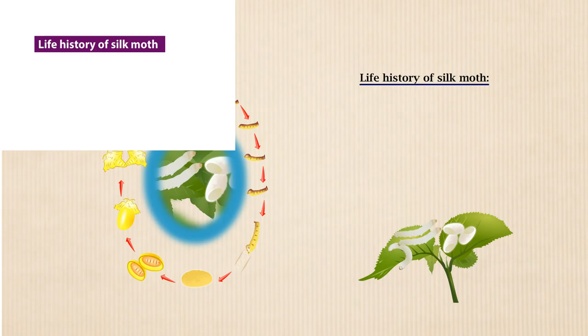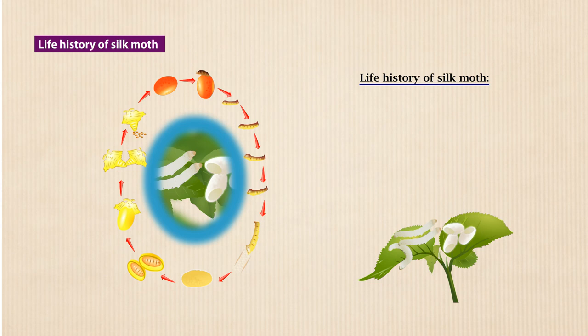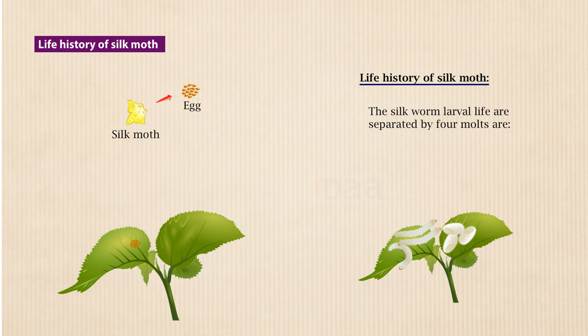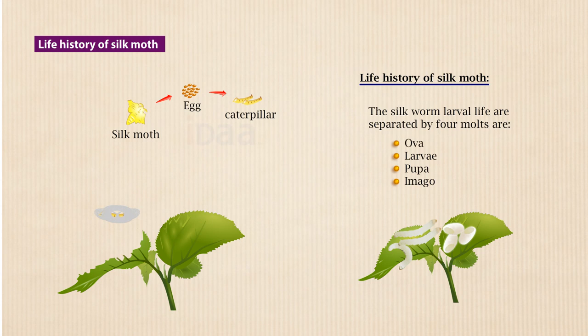Life History of Silk Moth: Silk is the natural fiber produced by silk moths. The high-quality silk fibers are produced by cultivated silkworms grown in a controlled environment. The stages in the life cycle of a silkworm are ova, larvae, pupa, and imago.